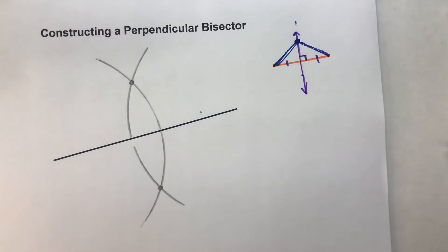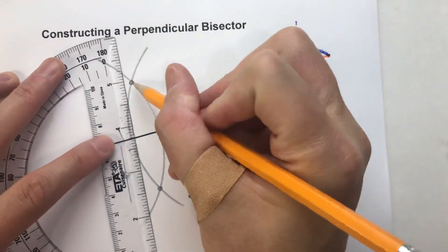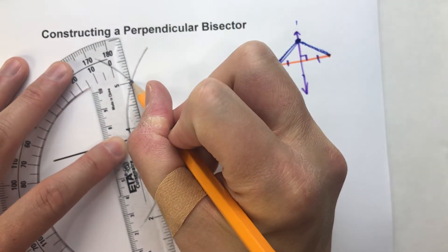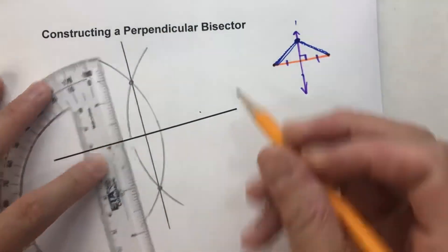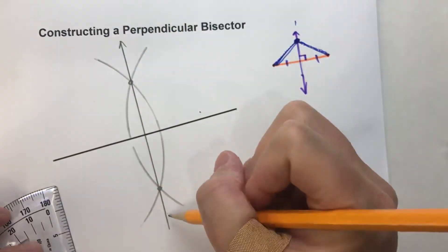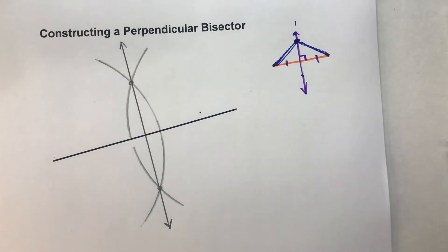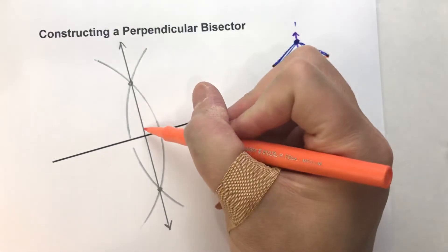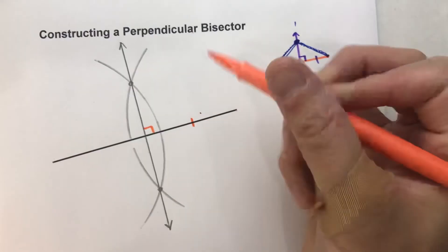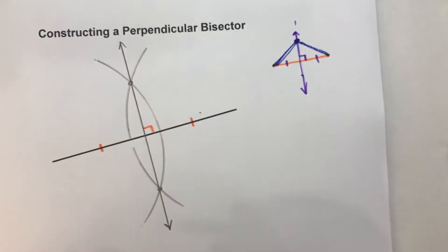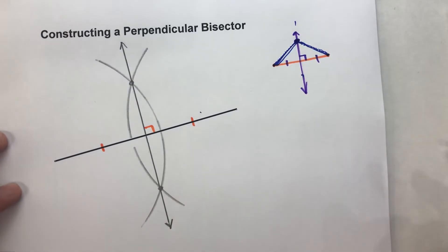And now that we have two points that are on the perpendicular bisector of this segment, we can draw a line through those two points. And this is my perpendicular bisector. I can mark it as such — it's perpendicular, and it's the same distance on this side as it is on here. So that line there is my perpendicular bisector.